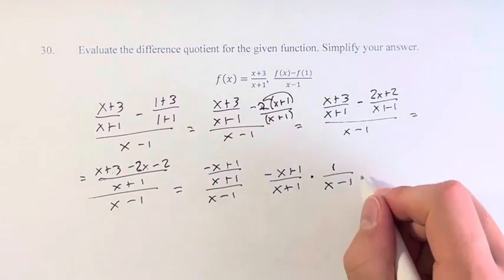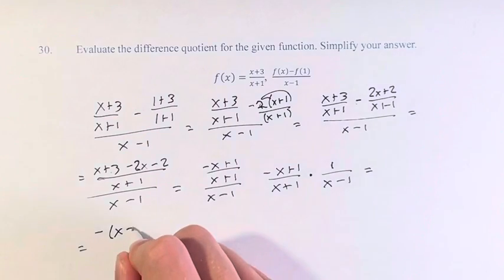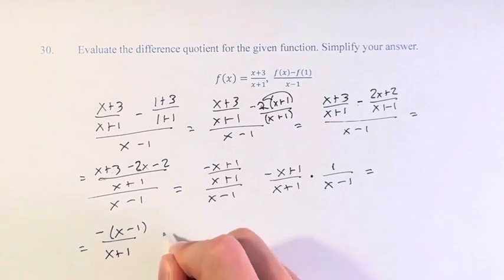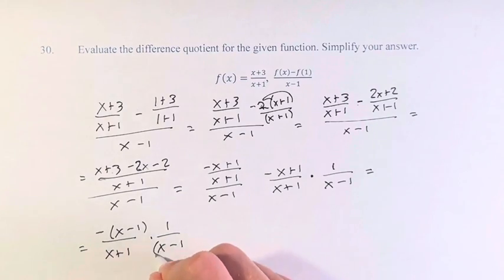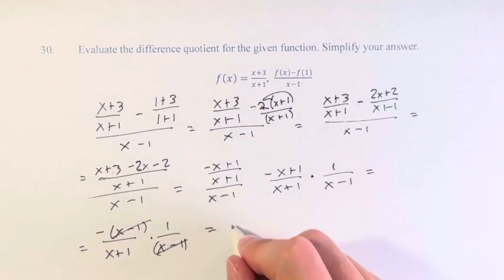And the reason that we're doing this is because if we look at the top, negative x plus 1 is equal to negative times x minus 1. This over x plus 1 times 1 over x minus 1 means that these cancel, and we're left with negative 1 over x plus 1.